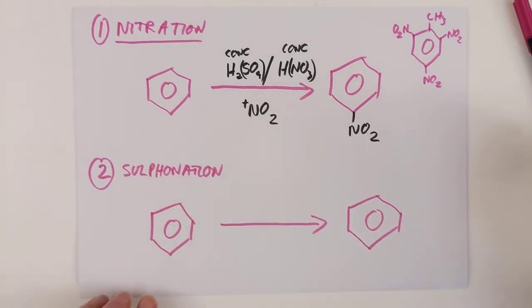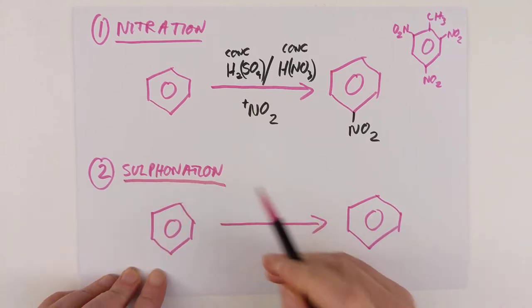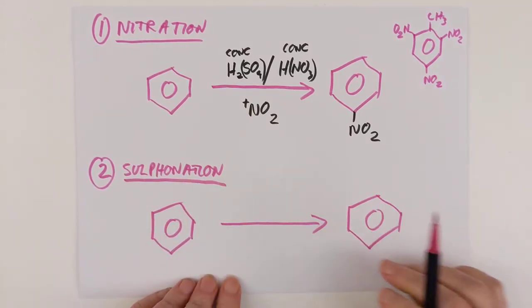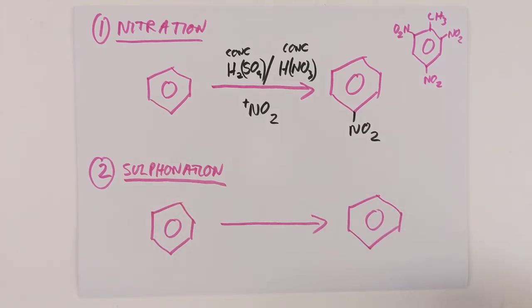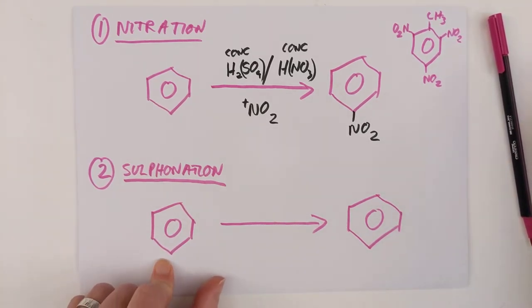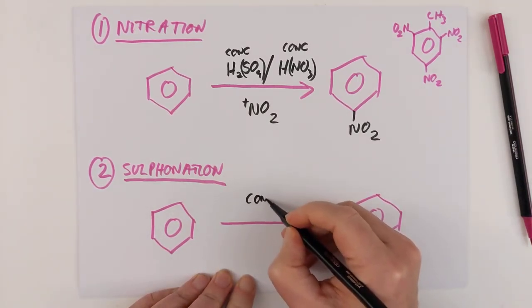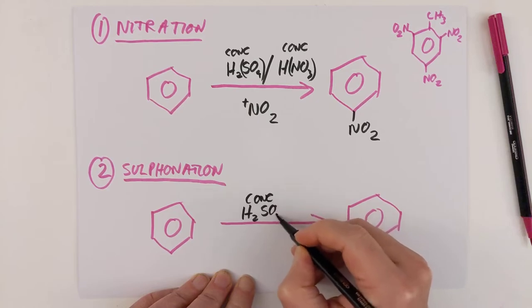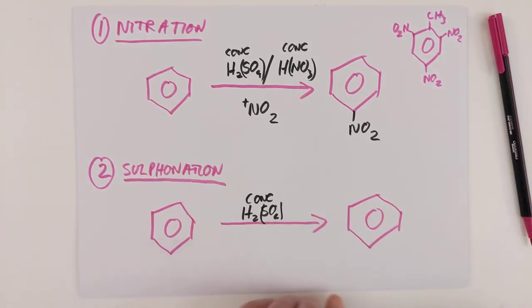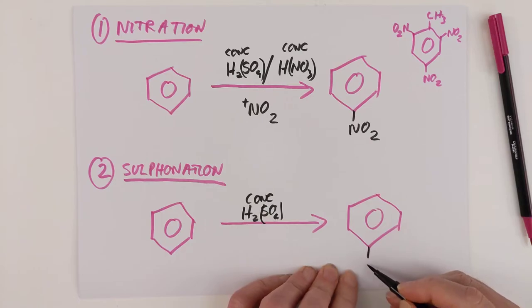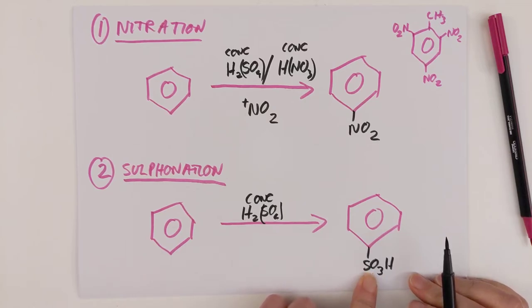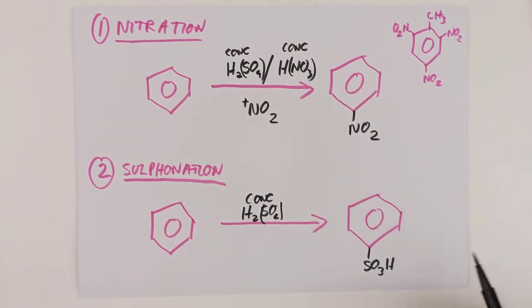So reaction two is sulfonation. And I know we spell it with an F these days, but I'm an old fart. So I'm going to stick with pH. Nothing you can do to stop me. So there. So we have a benzene ring. And we cook this up with just purely concentrated sulfuric acid this time. So conc H2SO4. And you end up making sulfonated benzene. SO3H. Don't worry about why it is that. There's a whole bunch of historic chemistry that used to be in sixth year. Do you need to know? No, we don't.